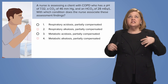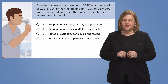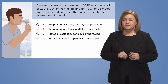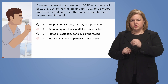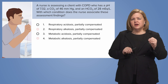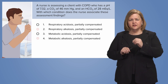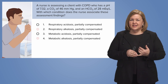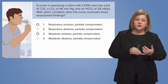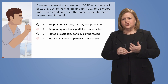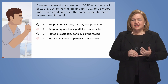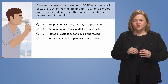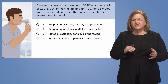No more saying 'I always get it down to two and then pick the wrong one.' You can do hard things — we're here to help. We're left with respiratory acidosis partially compensated or metabolic acidosis partially compensated. Here's what you have to look at: the CO2 of 46. Normal CO2 is 35 to 45, so this is just a little above normal. And bicarb's normal range is 20 to 26 — so a bicarb of 28 is high.